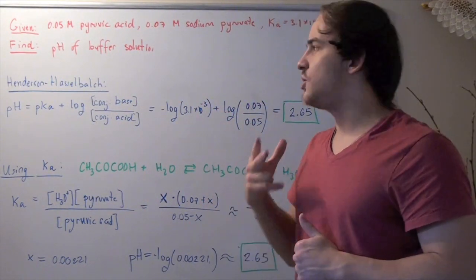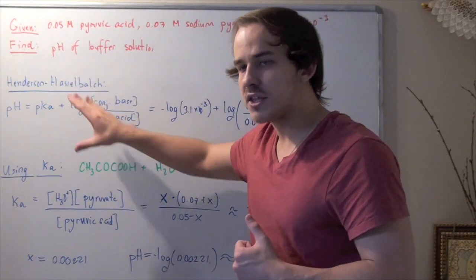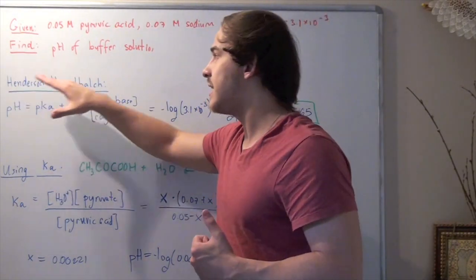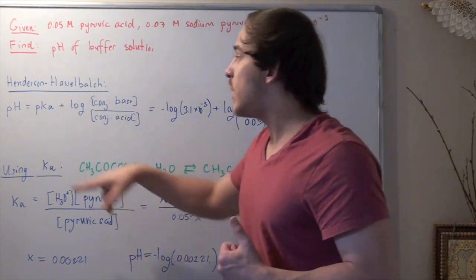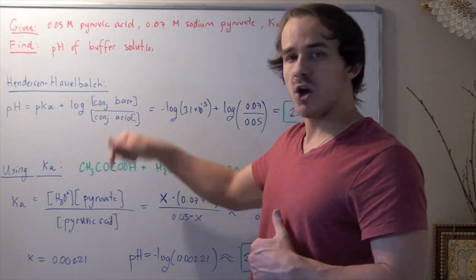There are two methods we can use to find the pH of the buffer solution. The first method involves the Henderson-Hasselbalch formula. If you haven't seen this formula before or don't know where it comes from, check out the link below. The second method is to simply use the Ka.